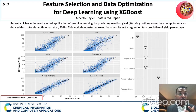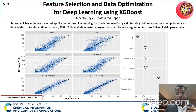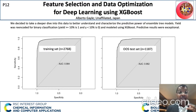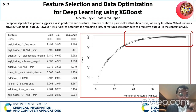Recently, Science featured a novel application of machine learning for predicting reaction yield percentage using nothing more than computationally derived descriptor data. This work demonstrated exceptional results with respect to a regression task predictive of yield percentage. We decided to take a deeper dive into this data to better understand and characterize the predictive power of ensemble tree models. Yield is re-encoded for binary classification and modeled using XGBoost. Exceptional predictive power suggests a valid predictive substructure. Here we confirm a Pareto-like attribution curve whereby less than 20% of features drive 80% of model output.